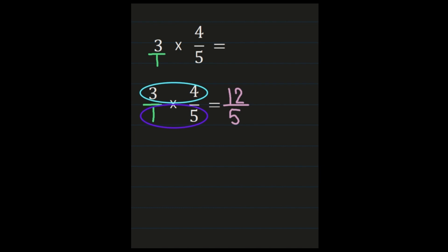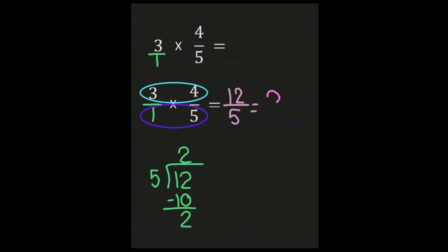Now I have 12/5, which is an improper fraction, so we need to turn it into a mixed number. Remember, if your teacher says to leave it as an improper fraction, leave your answer as 12/5. To convert, divide the numerator by the denominator: 12 divided by 5 is 2, remainder 2. The quotient of 2 becomes our whole number, the remainder of 2 becomes the numerator, and the denominator of 5 remains the same. Since 2 and 5 share no common factors, my final product is 2 and 2/5.